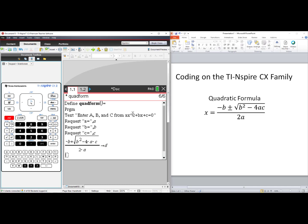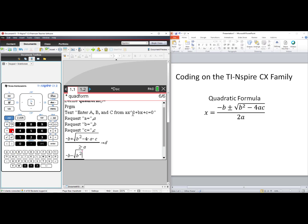Enter in the other part of the quadratic formula. Ctrl-Divide for the fraction template. Negative B minus the square root of B² minus 4 times A times C, all over 2 times A. Again, right arrow to get out of the denominator. Store this solution into variable E. Press Enter.